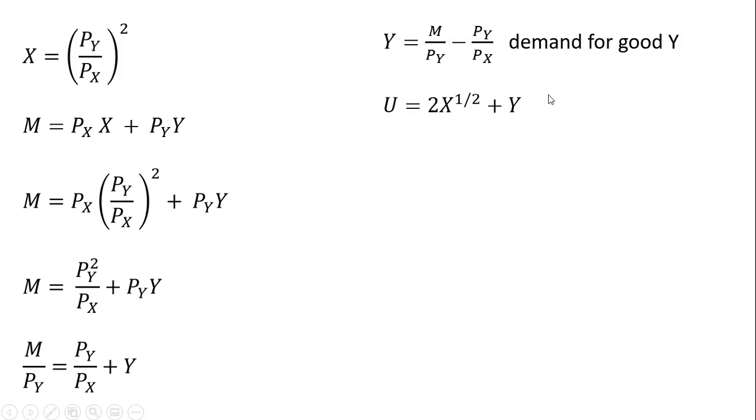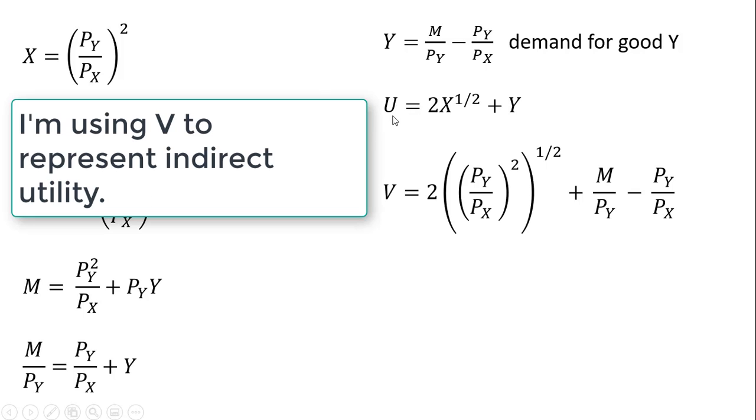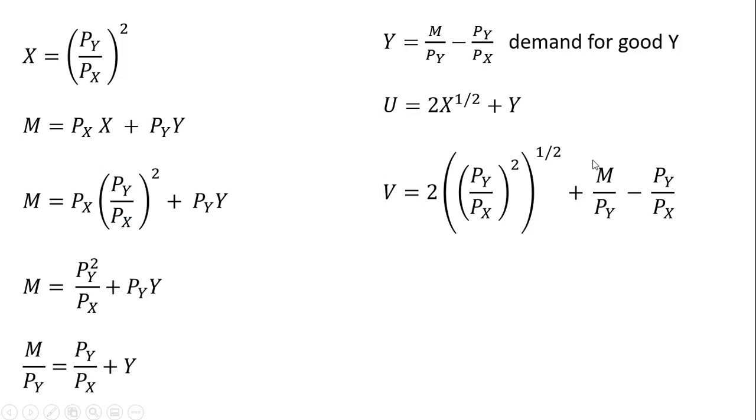We're going to take our demand for good X and demand for good Y and plug it into the utility function. That will give us our indirect utility function. Where I have X, I'm plugging in the demand for good X, and where I have Y, I'm plugging in the demand for good Y.